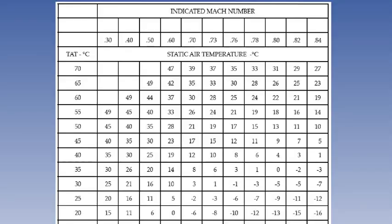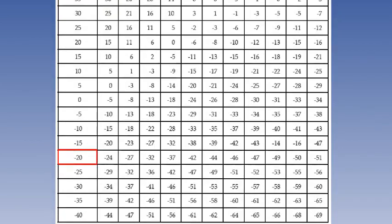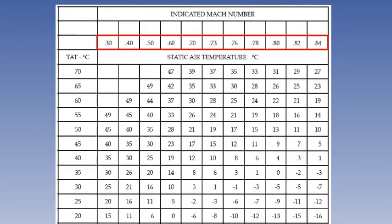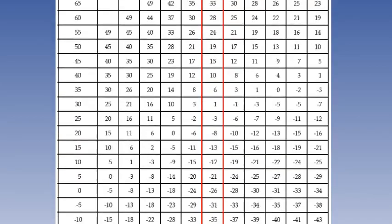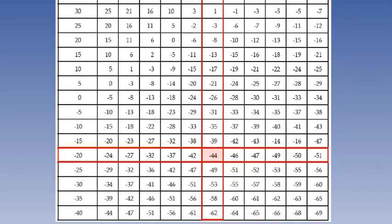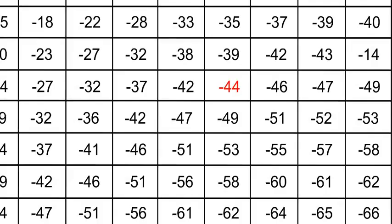This is an example of the correction table for the Boeing 737. We'll show how it works using the same numbers. You enter with the left-hand column and go down to the indicated total air temperature, which is minus 20 in our example. Then in the Mach number row, you find 0.73. You read off the static air temperature where the row and column meet. As we can see, it gives the same answer: minus 44.